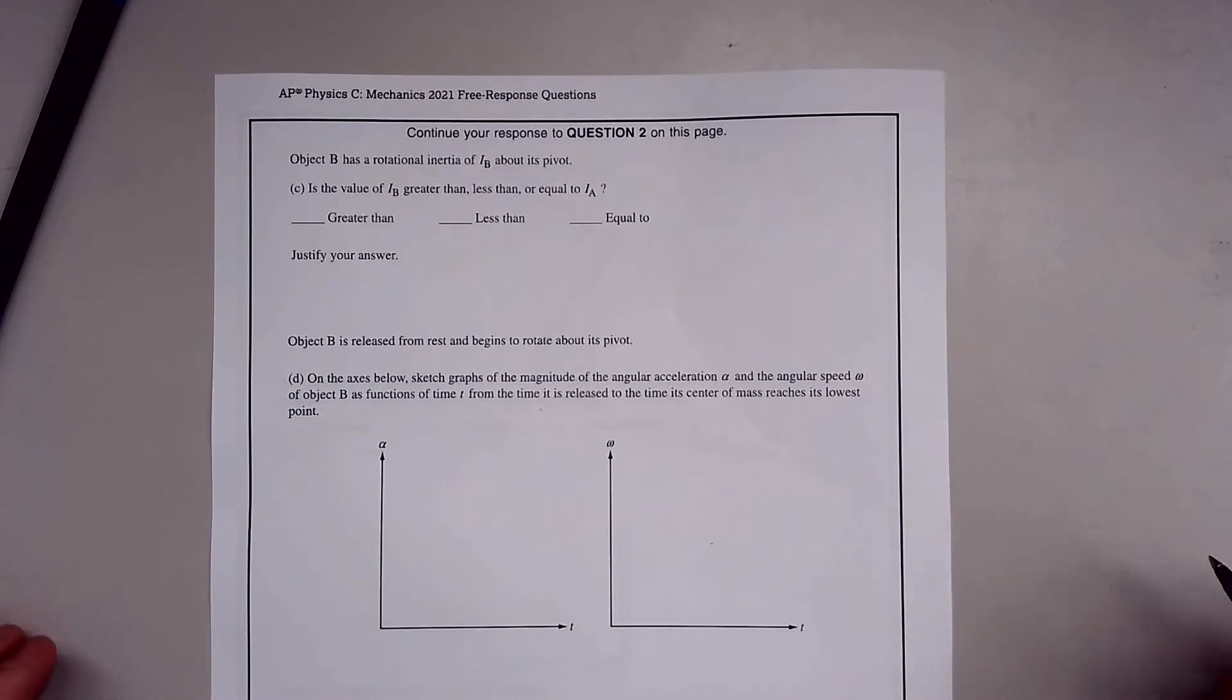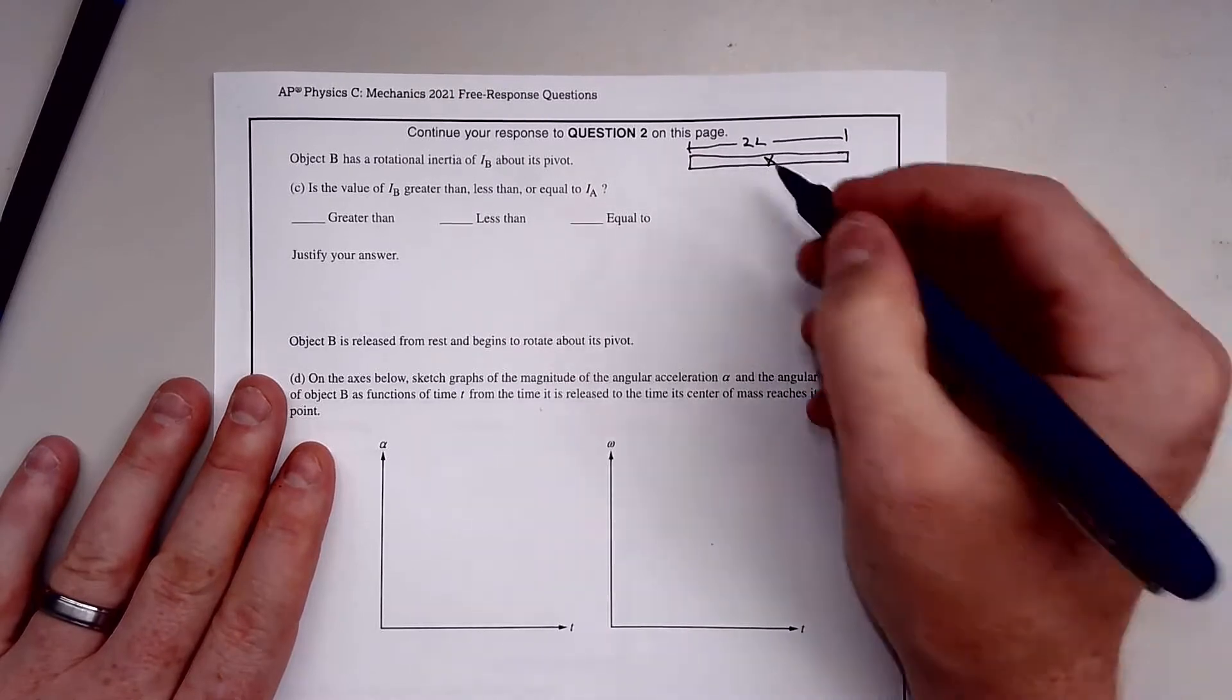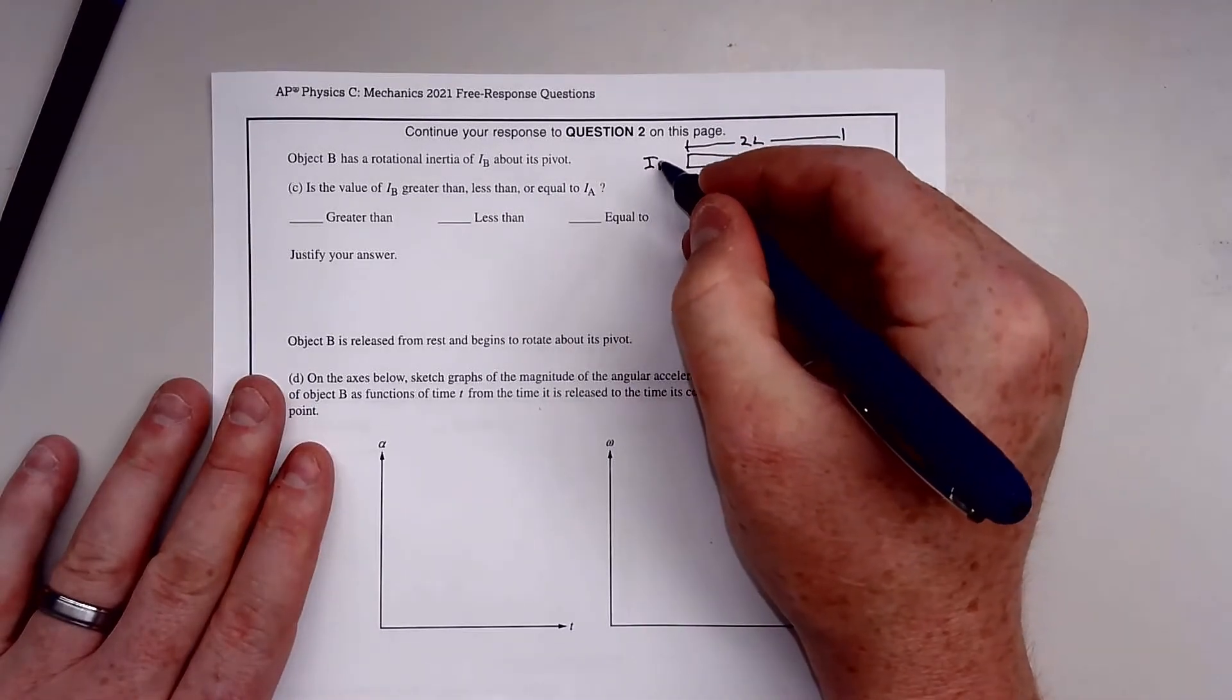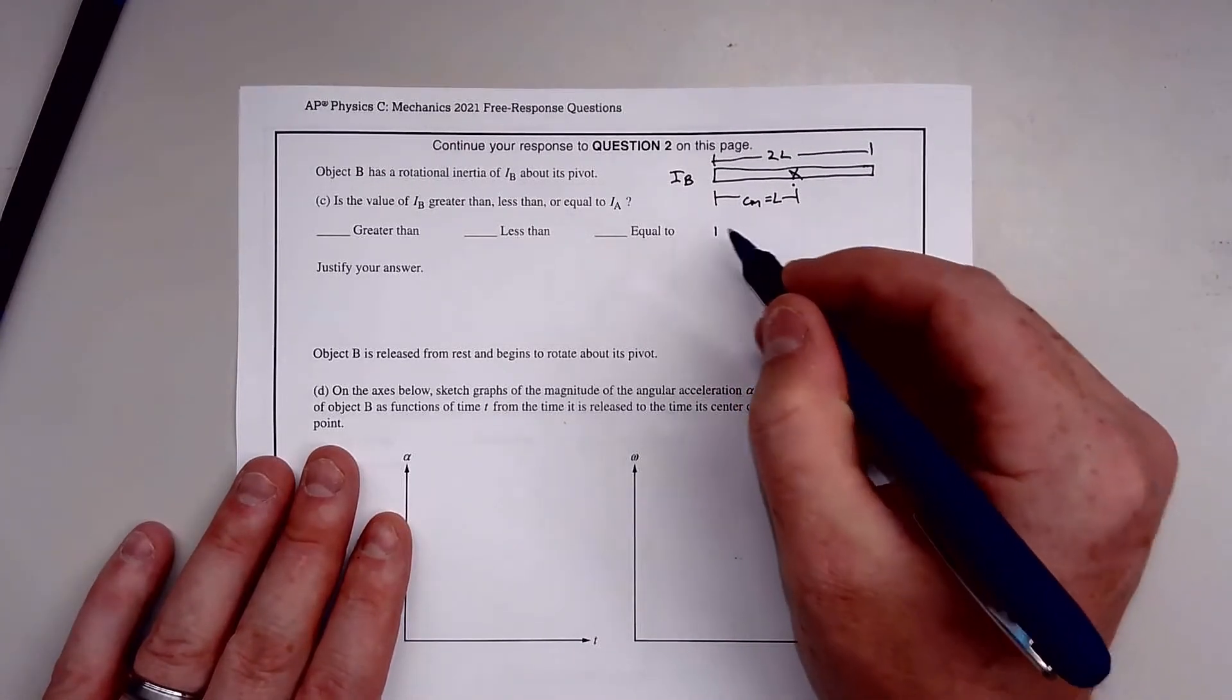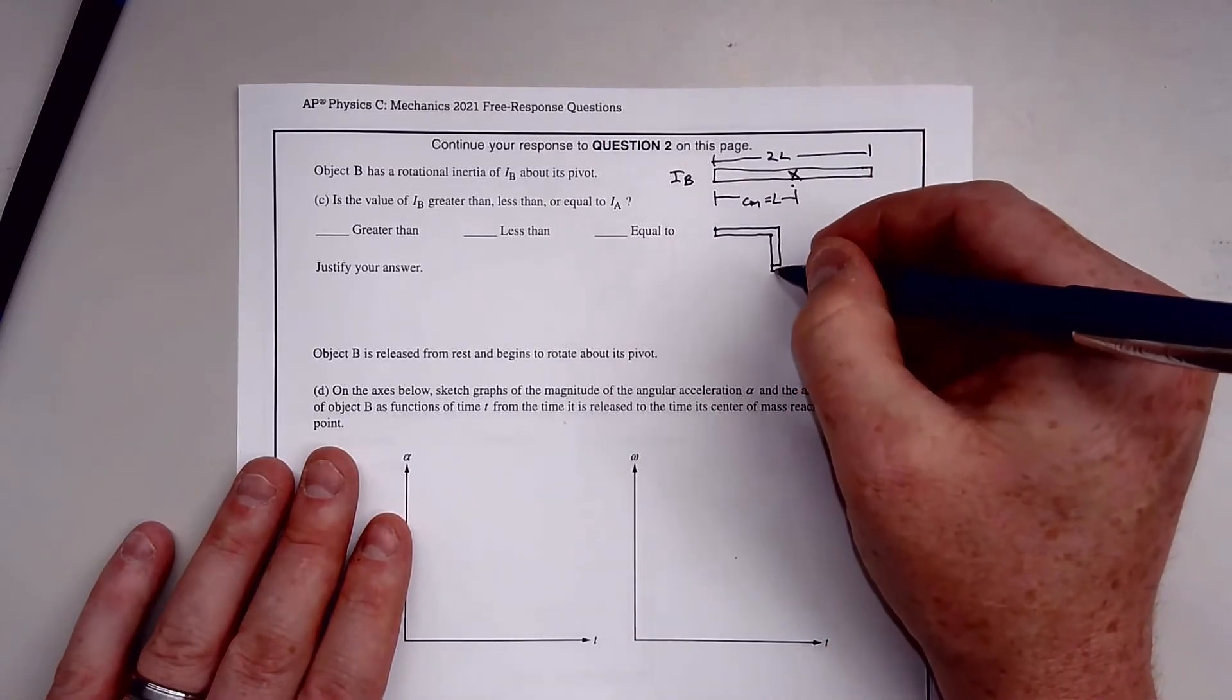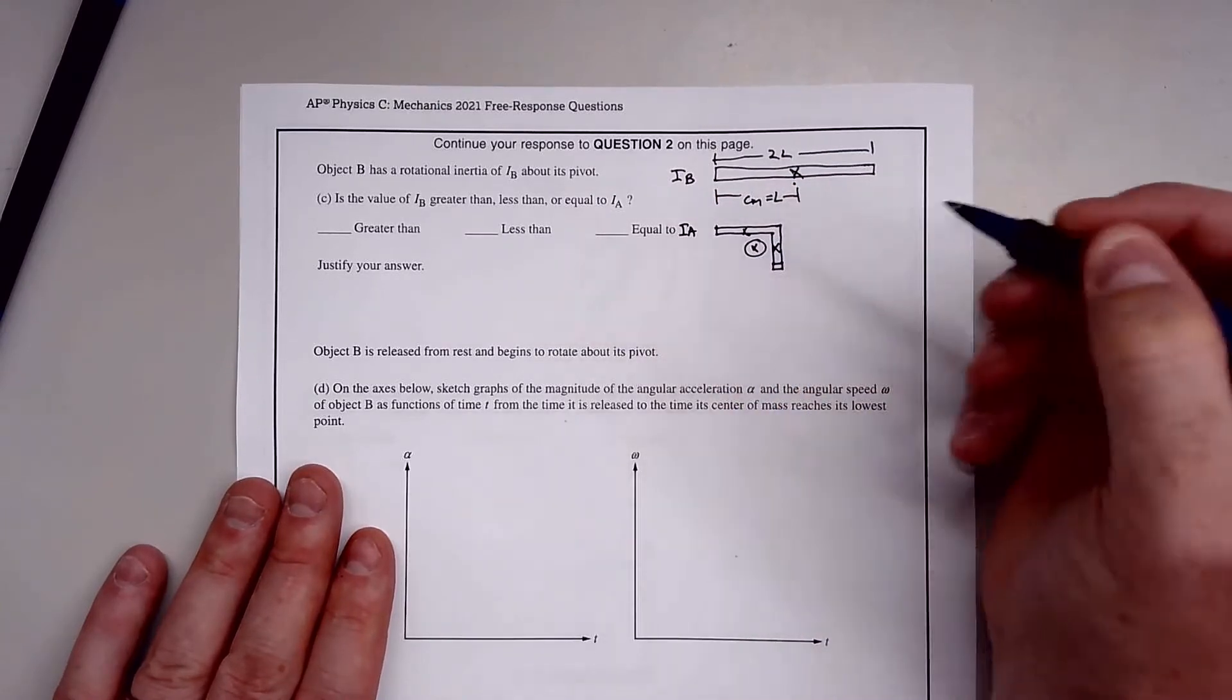Object B has a rotational inertia of I_B about its pivot. This was object B at length 2L, so its center of mass is at L. Is the value of I_B greater than, less than, or equal to that of I_A? The center of mass of I_A was here, so that puts that center of mass directly here. And remember, this is our pivot point.